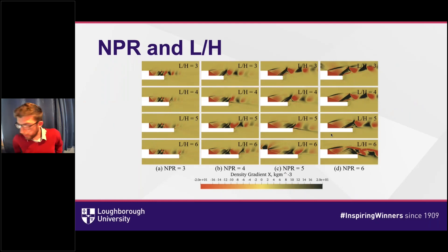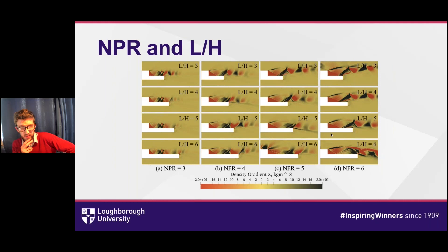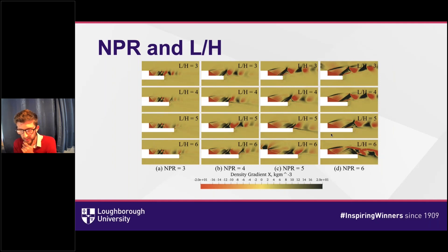For a nozzle pressure ratio of four, two shocks on the deck were observed close to the termination, also interacting with the termination shock. As the deck length was increased — by increasing the deck-length-to-nozzle-height ratio — these two shocks remained where earlier reflected compression waves from the shear layer coalesced and induced separation. Their interactions with the shock cells dictate which way the plume deflects, with compression waves tending to cause a downward deflection.